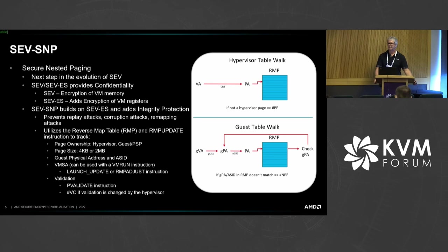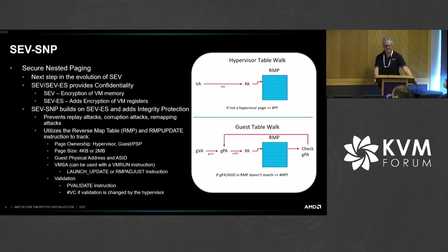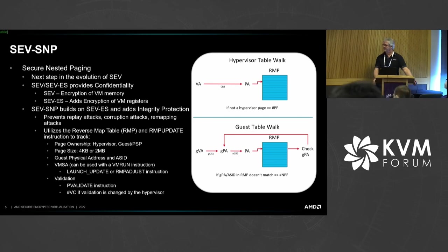The idea is that we have this table that can track information about the guest: whether it owns the page or whether the hypervisor owns the page, the page size associated with the 4K page in question — whether it's part of a 2 meg page or a 4K page on its own, the GPA assigned to it along with the ASID of the guest so you can differentiate GPAs from the same GPA from multiple guests, and whether the page is a VMSA page which can be used to run an AP on a VM run command. We'll be using this quite a bit in the SVSM in order to start APs.